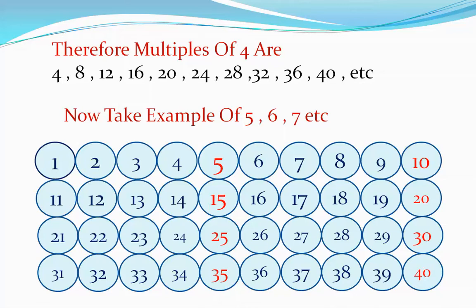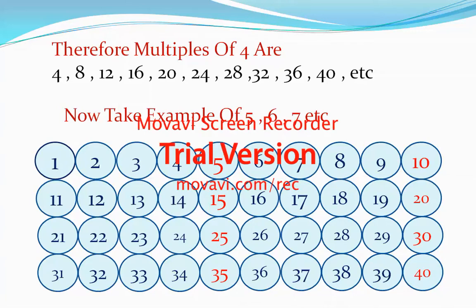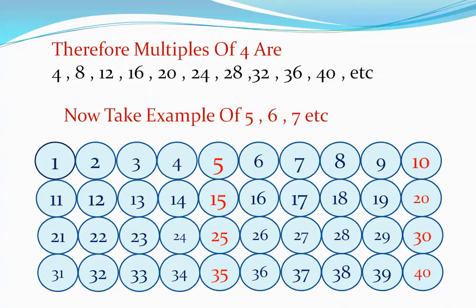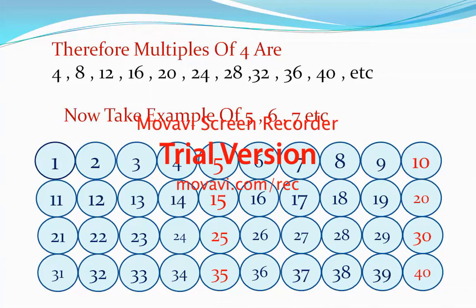Similarly, for six: six ones are six, six twos are twelve, six threes are eighteen, six fours are twenty-four, six fives are thirty, six sixes are thirty-six. These are multiples of six.